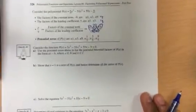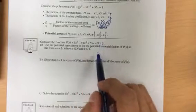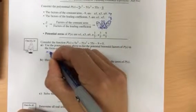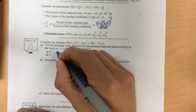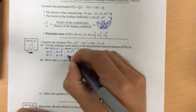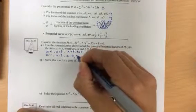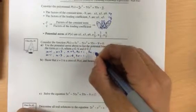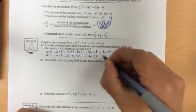So in this example, we want to consider this function, the one we looked at above, and we want to use potential zeros above to list the potential binomial factors. So if I'm looking at plus or minus 1, then the potential binomial factors are going to be x plus 1 and x minus 1. If I'm working with plus or minus 3, it's going to be x plus 3 and x minus 3, x plus 9, x minus 9. 1 fifth would be 5x plus 1 and 5x minus 1. 3 fifths would be 5x plus 3 and 5x minus 3. And finally, 5x plus 9 and 5x minus 9.